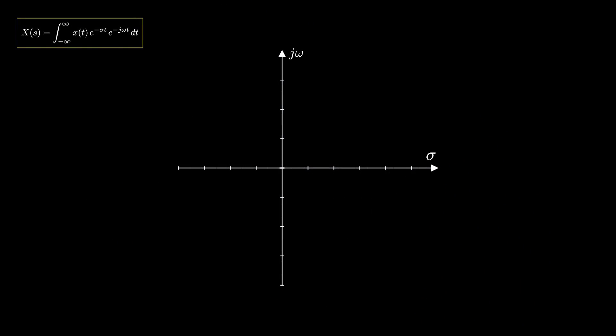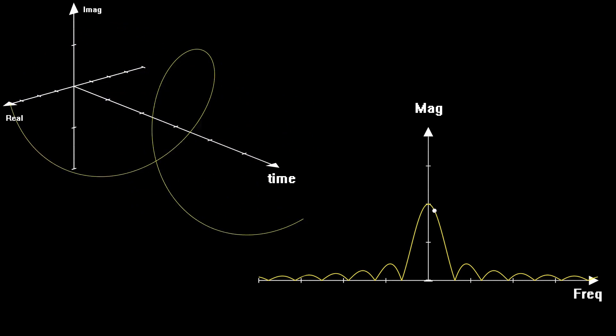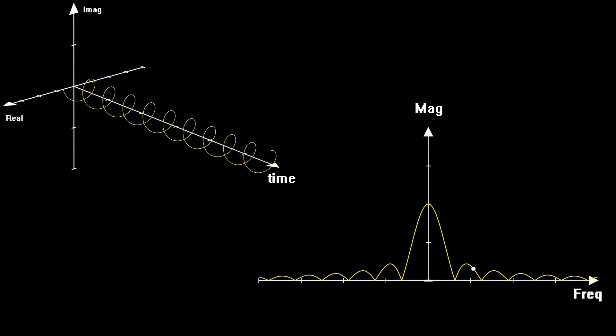Values of sigma in the S plane where the Laplace transform exists determine the region of convergence. If the region of convergence contains the j omega axis, then the Fourier transform exists. So there are functions whose Fourier transform doesn't exist, while the Laplace transform exists for restricted values of sigma. Note that the j omega axis is the frequency axis in the Fourier transform. Every point in the Fourier amplitude and phase spectrum corresponds to a complex exponential function with fixed amplitude and phase shift, oscillating with frequency omega.